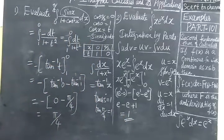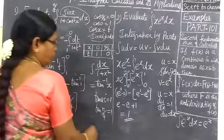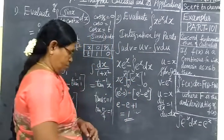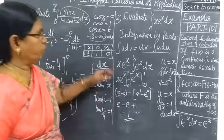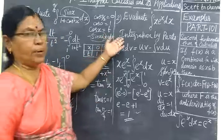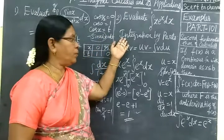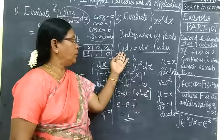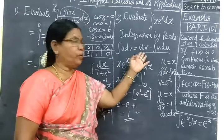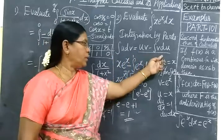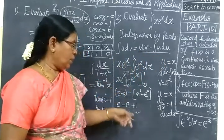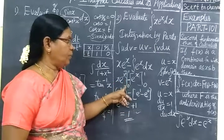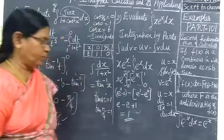The answer for the first problem is π/4, and the answer for the second problem is 1. Here we applied integration by parts: integral UdV equals UV minus integral VdU. Please practice in class. Thank you.